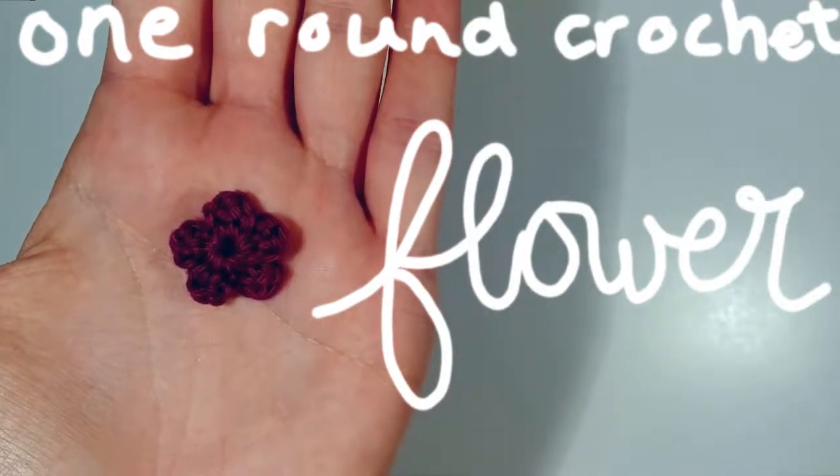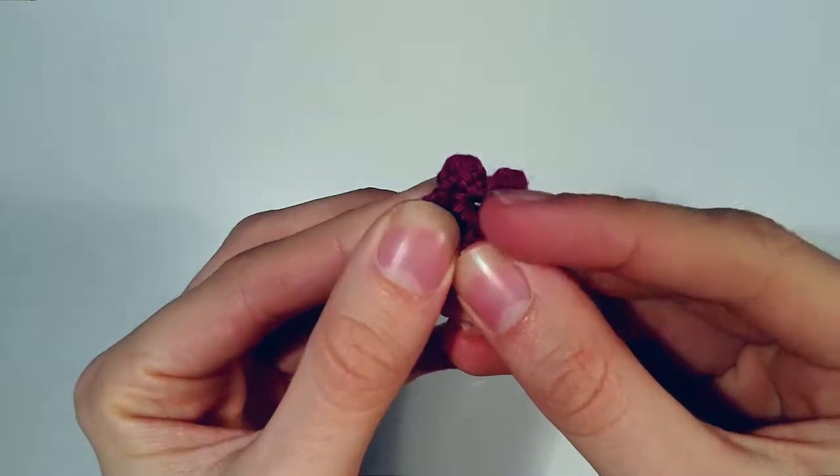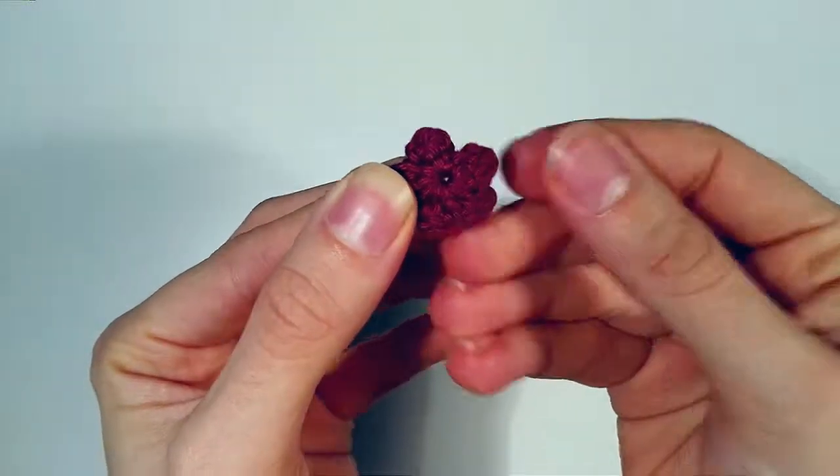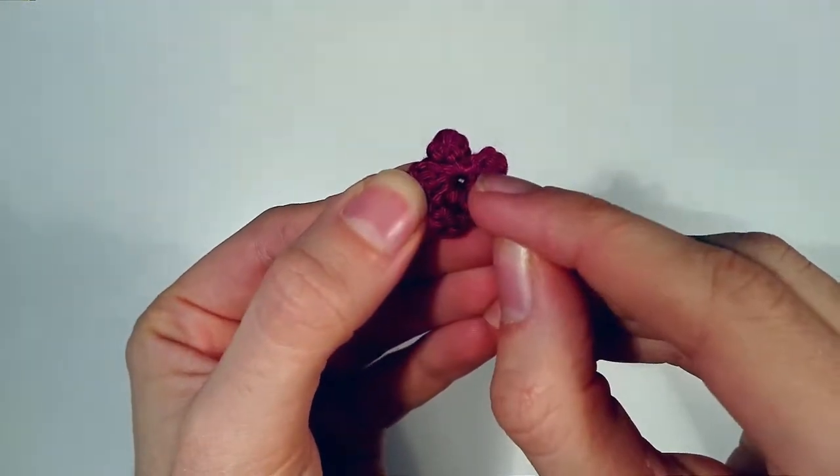So today I'll be teaching you how to make a little flower like this. This flower is actually made from just one round of crochet. So we do a magic ring and then one round of crochet.